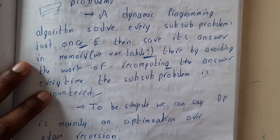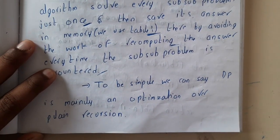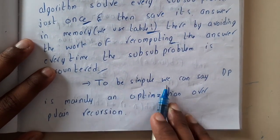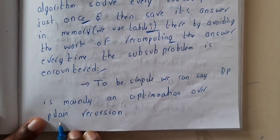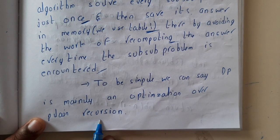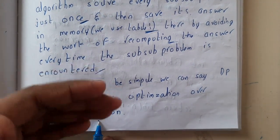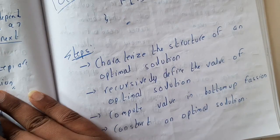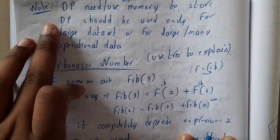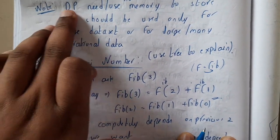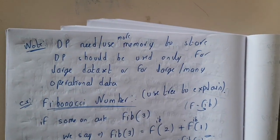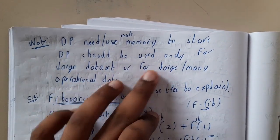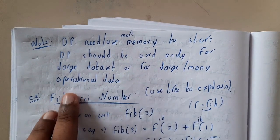Dynamic programming is mainly an optimization over plain recursion. Instead of doing the same computation again and again, we store results as a shortcut. One trade-off is that dynamic programming uses more memory to store results. Therefore, dynamic programming should be used only for large datasets or large-scale operations.